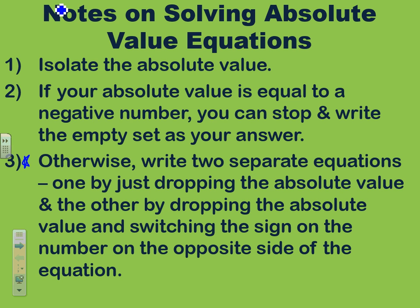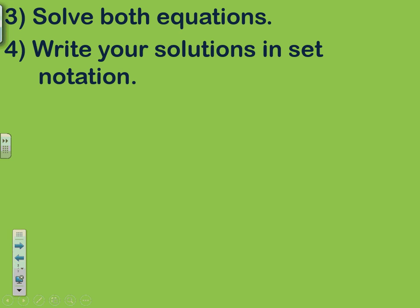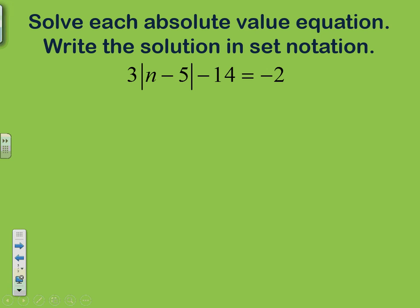The reason we do that is because the absolute value of any number is always positive, but a negative number inside can produce the same absolute value. So we can have two possible answers that produce the same solution. That's why we split in step three. Finally, we solve each equation and write the answer in set notation, which uses curly brackets.